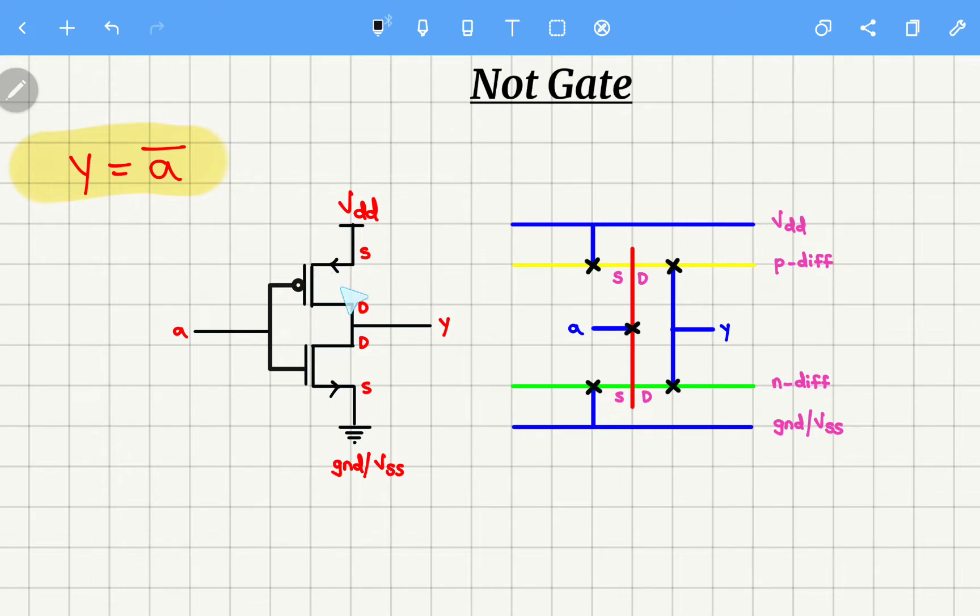Next, you can observe this is nothing but PMOS. So for PMOS the color coding that we need to use is yellow, and it is P diffusion. You need to write here as P diffusion. And the color coding for this is yellow.